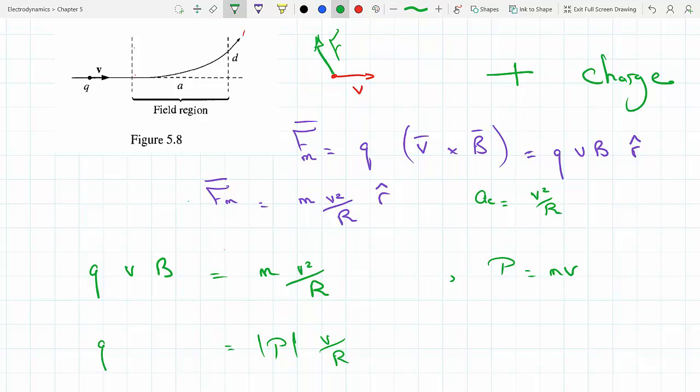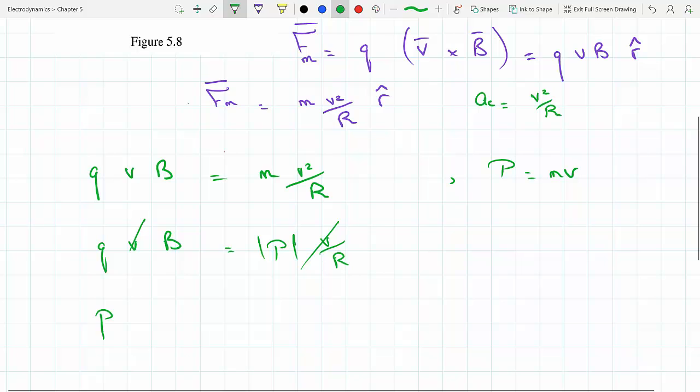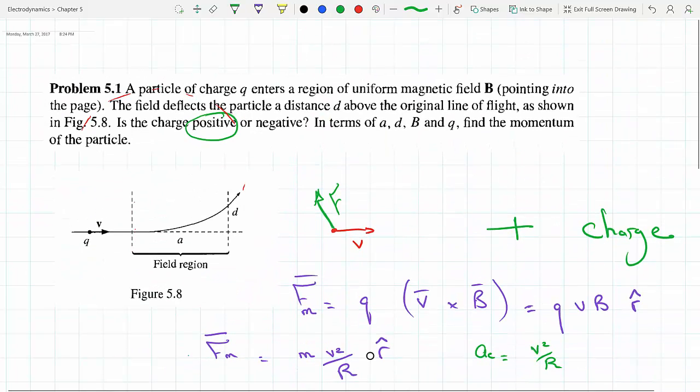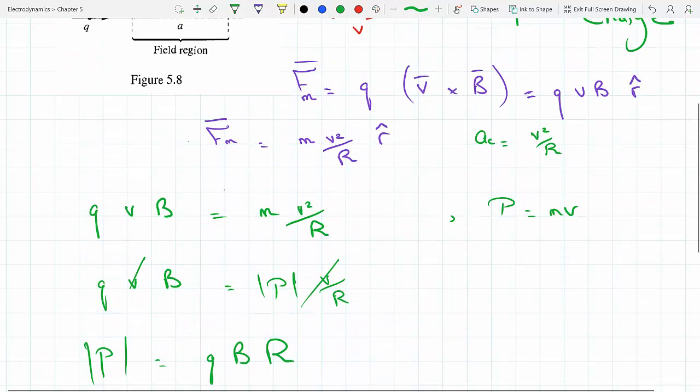And that's equal to qvB. You can see that the velocity here cancels out, and we are left with the magnitude of the momentum equal to qBr. Now you don't want that r in the answer because he wants it in terms of the given quantities.